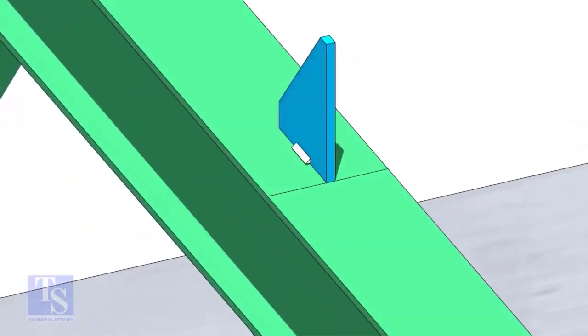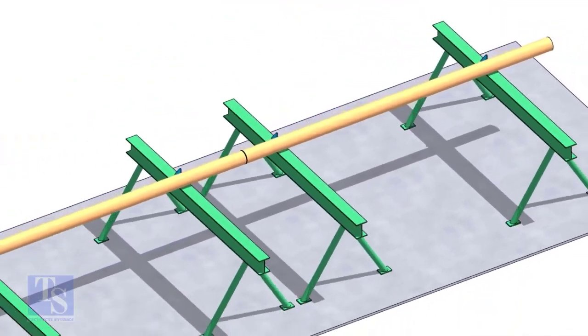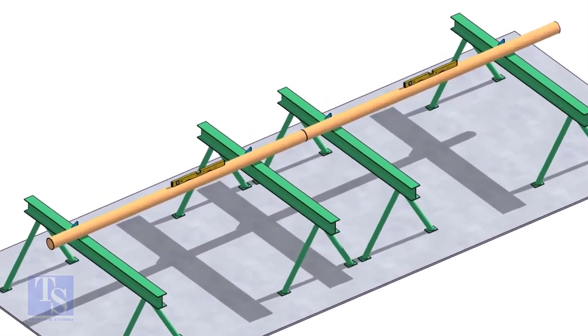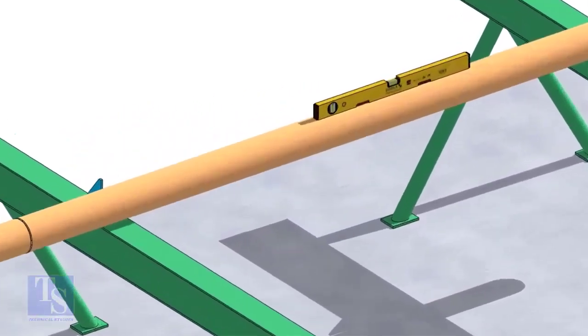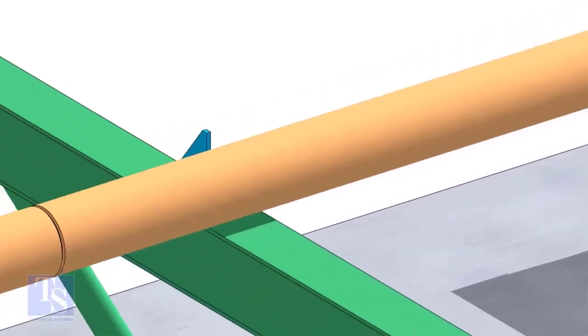Put the pipes on the stands, touching the stopper plates, as shown. The joint shall be in between the supports. Now the pipes are already straight, horizontally and vertically. You can cross-check the level of the pipes.